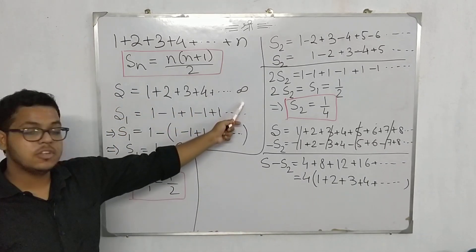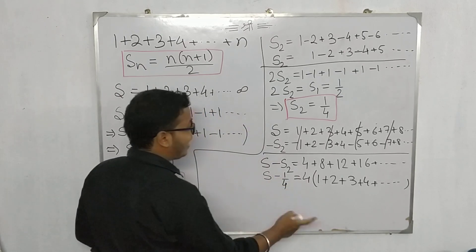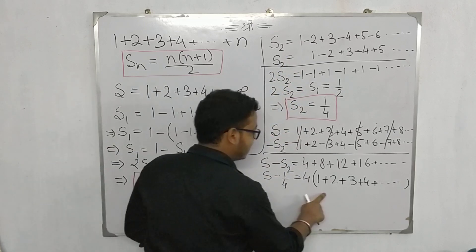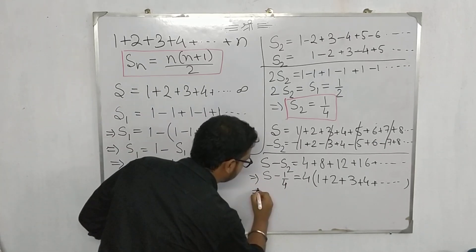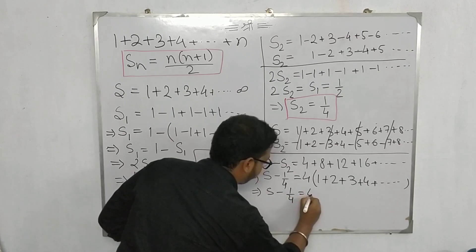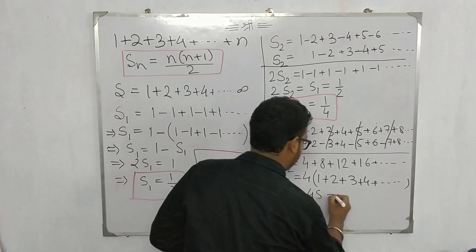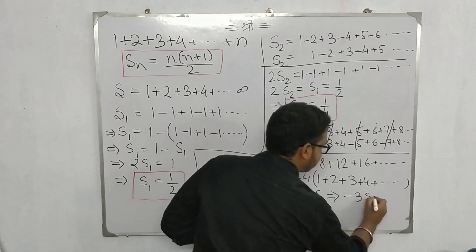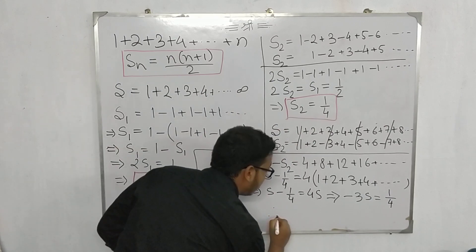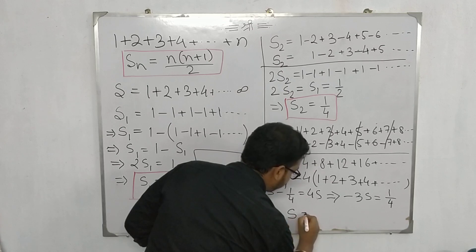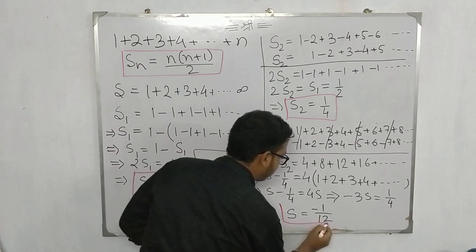So this is 1+2+3+4 up to infinity. If you notice, this is nothing but the series s which we were talking about. So I will write it as s - 1/4 = 4s, because we have proved s₂ is 1/4 and this whole becomes s. Now if we take 4s over here and 1/4 over that side, what we get is -3s equals 1/4. Therefore s becomes -1/12. So this is the final result.